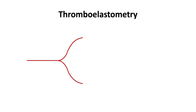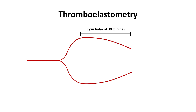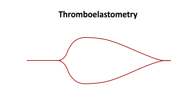As fibrinolysis proceeds, the current amplitude decreases, and the lysis index at 30 minutes is measured. Lysis proceeds until the reaction ends and the pin moves freely again. Thus, thromboelastometry measures clot initiation, clot propagation, and fibrinolysis.